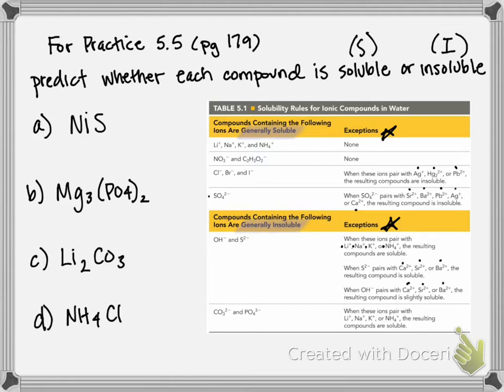So in each side, we have exceptions to the rule. And then we have carbonate and phosphate, which are typically insoluble unless paired with lithium, sodium, potassium, or ammonium. In that case, they would be soluble. So we're going to use this chart to help us determine whether each of the compounds listed here is soluble or insoluble.